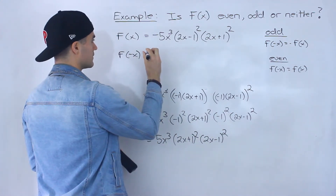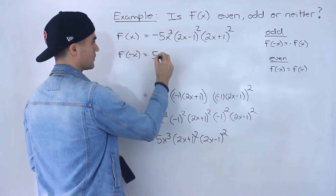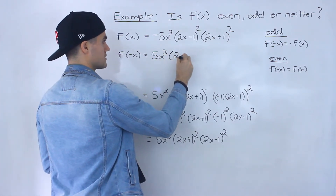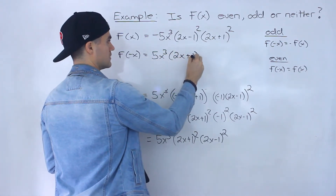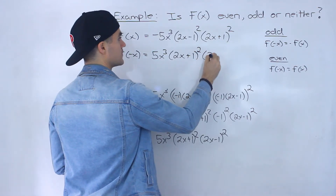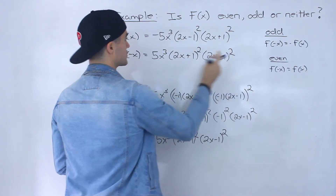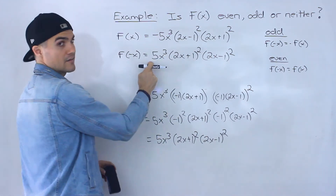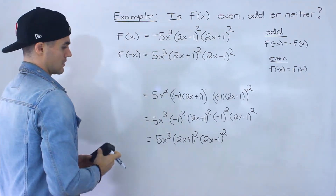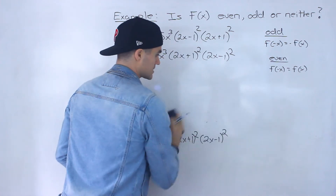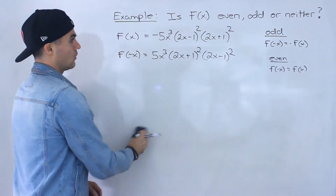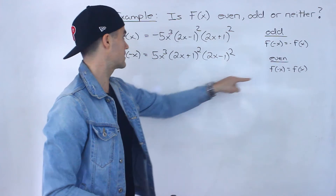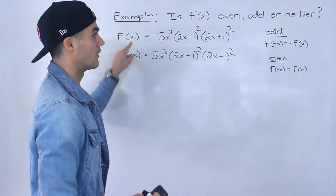So from here, does f of negative x equal f of x? No, it doesn't — it's close. The factors are all the same, but this is a negative 5 and that's a positive 5. So just that small difference tells us the function is not even, because f of negative x does not equal f of x.